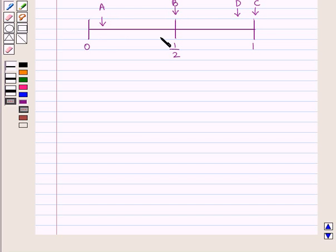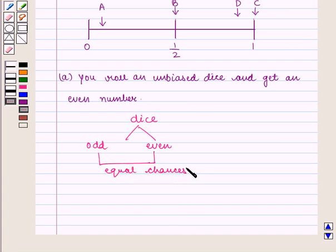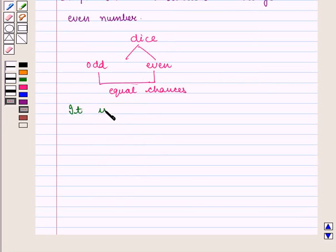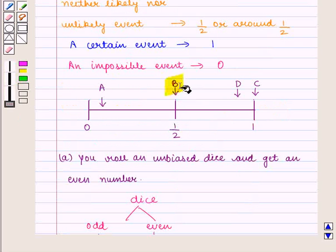Now the first event is rolling an unbiased dice and get an even number. We know that there are odd or even numbers in dice, so both have equal chances of coming. So we can say it is neither likely nor unlikely event. And we know that neither likely nor unlikely event has probability 1 by 2 or around 1 by 2. So it matches B, that is 1 by 2.